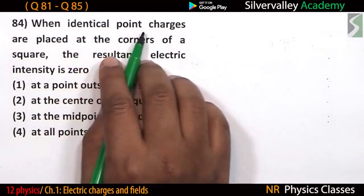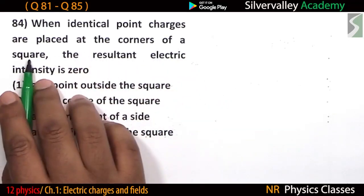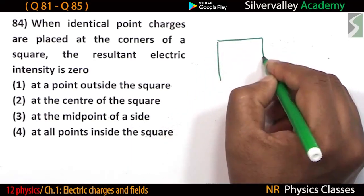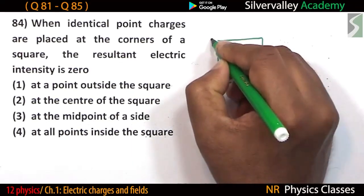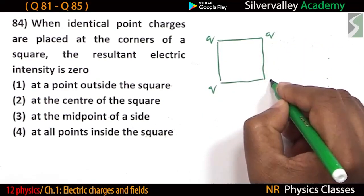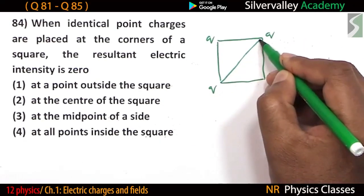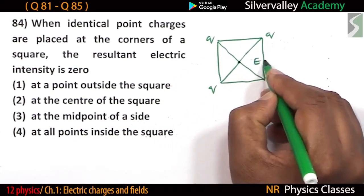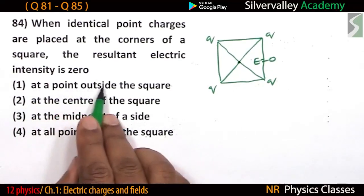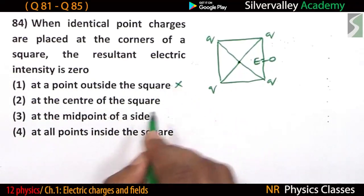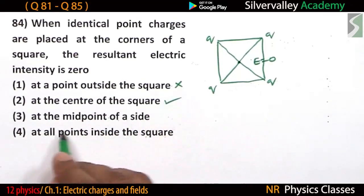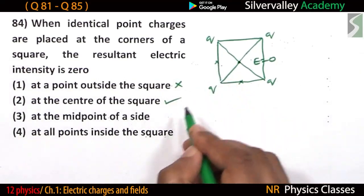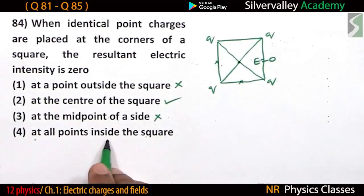When identical point charges are placed at the corners of a square, the resultant electric field intensity is zero only at the centre of the square. So electric field equals zero at the centre. The options to check are: at a point outside the square, at the centre of the square, at the midpoint of a side, and at all points inside the square. The correct answer is at the centre of the square.